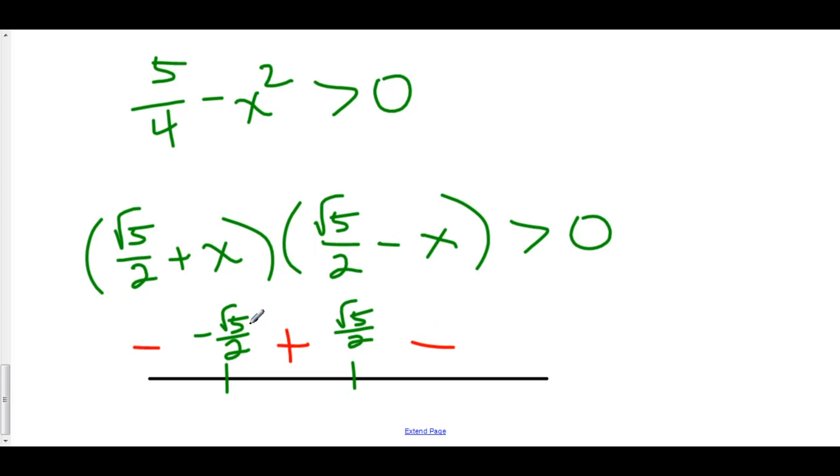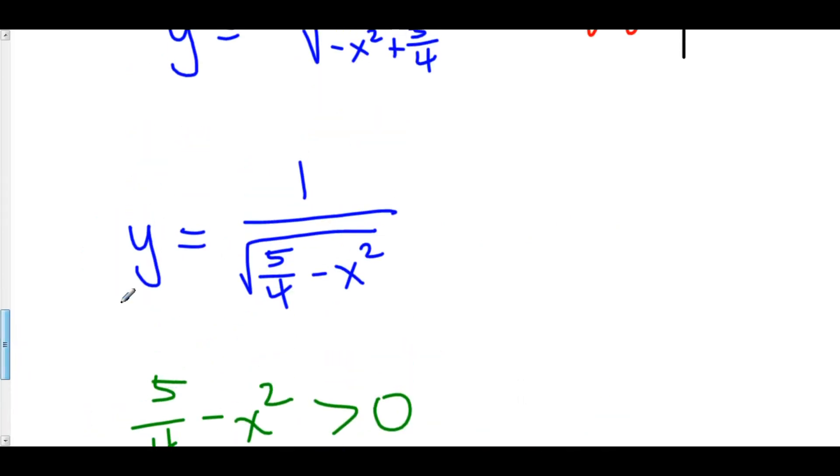Therefore, everything is going to be positive in between negative root 5 over 2 and positive root 5 over 2, not including them because then we would have a 0. And so, our domain is negative root 5 over 2 is less than x is less than root 5 over 2.